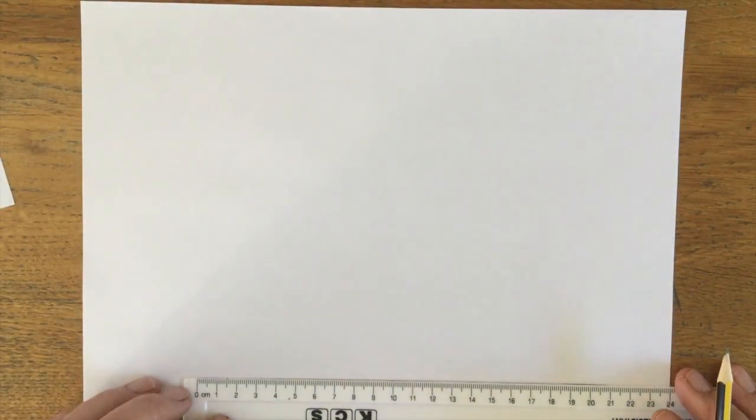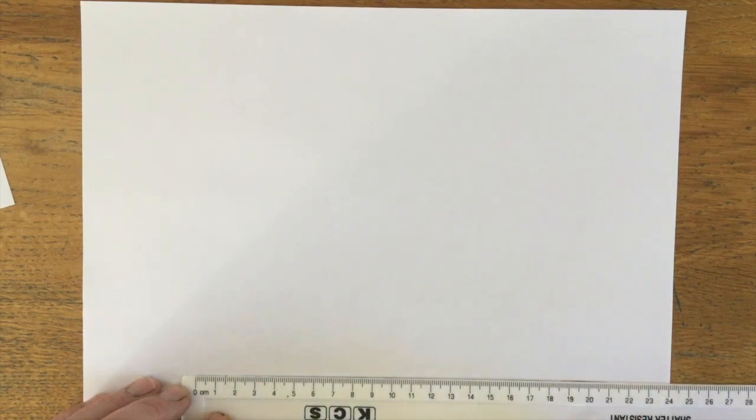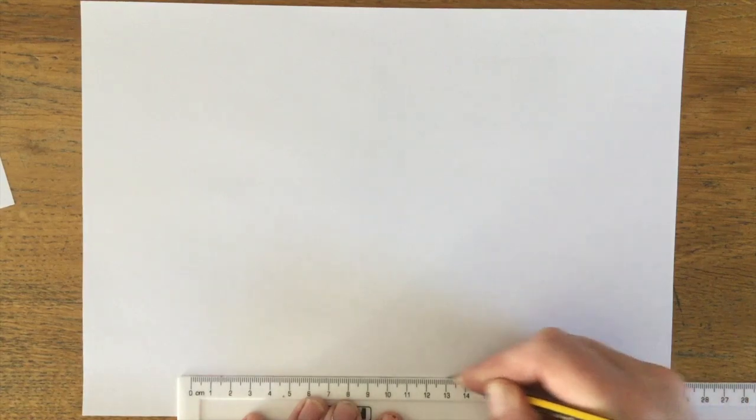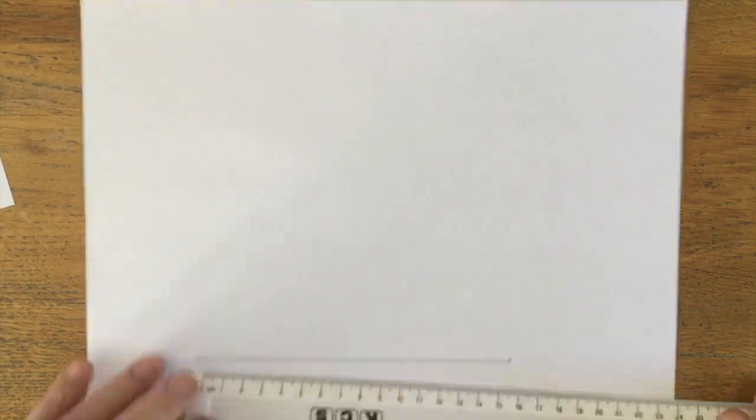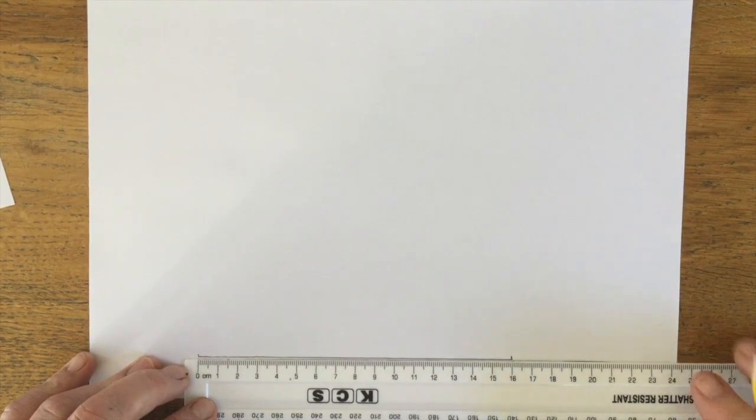But I'm just going to keep this nice and simple and just use a ruler. A simple way of doing this is I've got 16 cm. So I always do my lines, put my markings on there. I'm going to mark halfway along the line, which is 8.